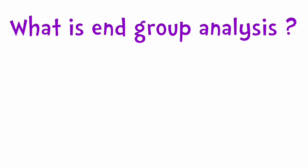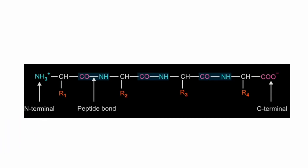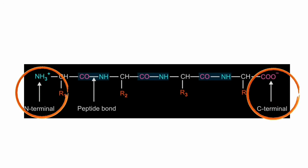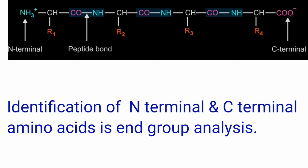Coming to the meaning of N group analysis: we know that in a polypeptide chain there are two ends — one is the amino terminal, also called the N terminal, and the second is the carboxy terminal, or C terminal. Identification of the amino acids present at these two terminals is known as N group analysis, because you are analyzing the amino acids at the two ends of the polypeptide chain.